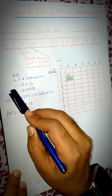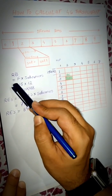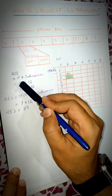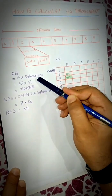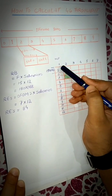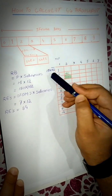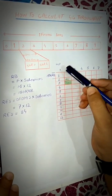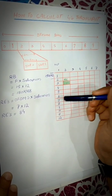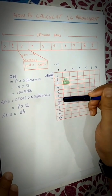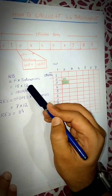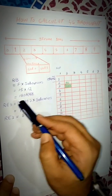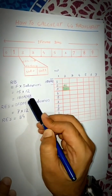To calculate the RB bandwidth in the frequency domain: one RB equals frequency multiplied by subcarriers. One subcarrier equals 15 kHz, and one RB has 12 subcarriers. So 12 multiplied by 15 kHz equals 180 kHz per RB.